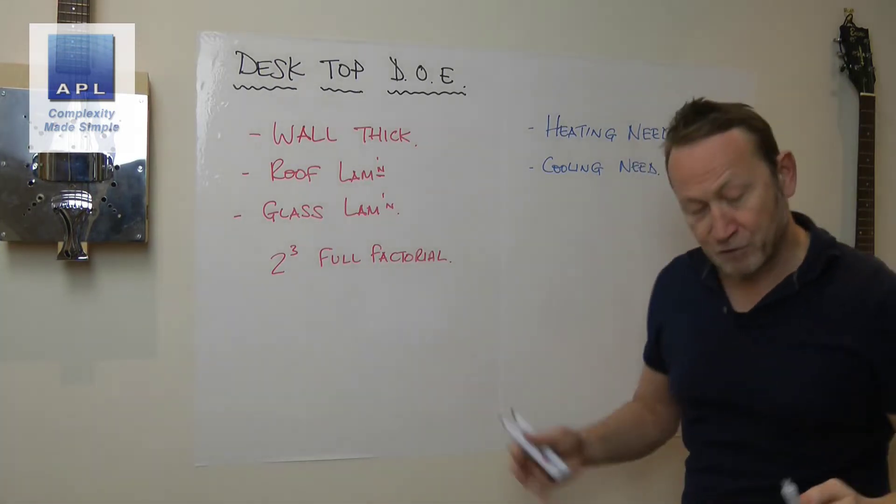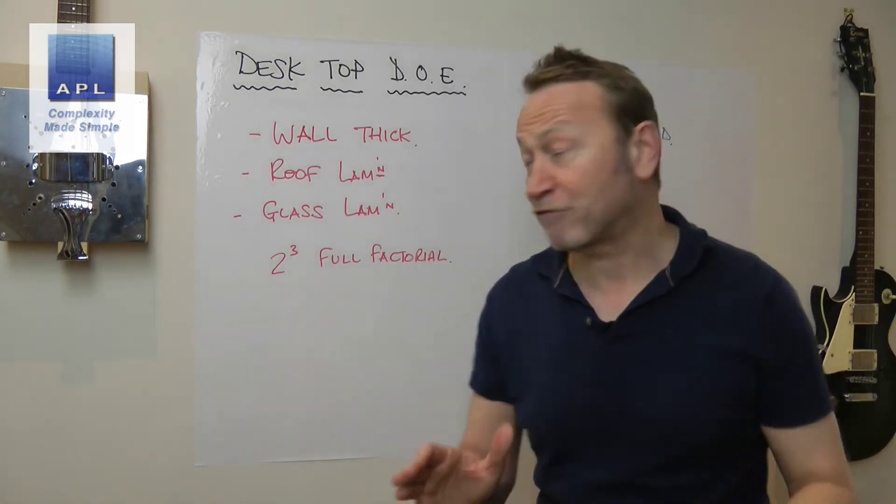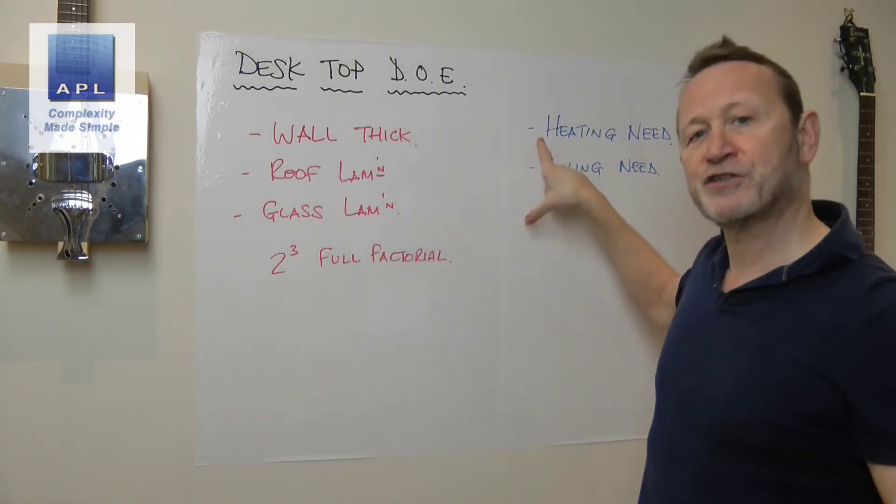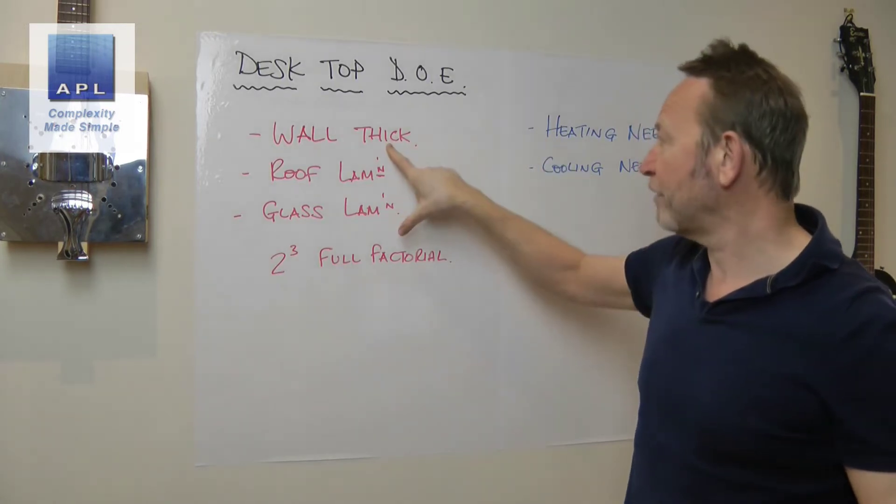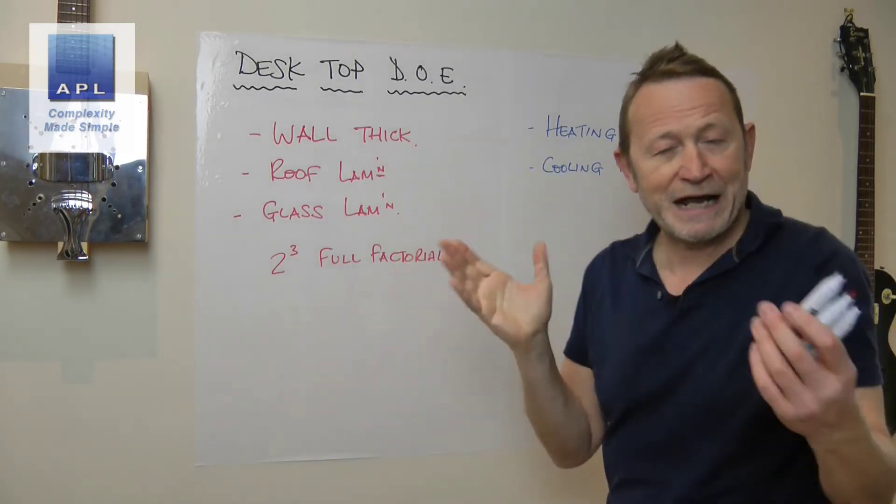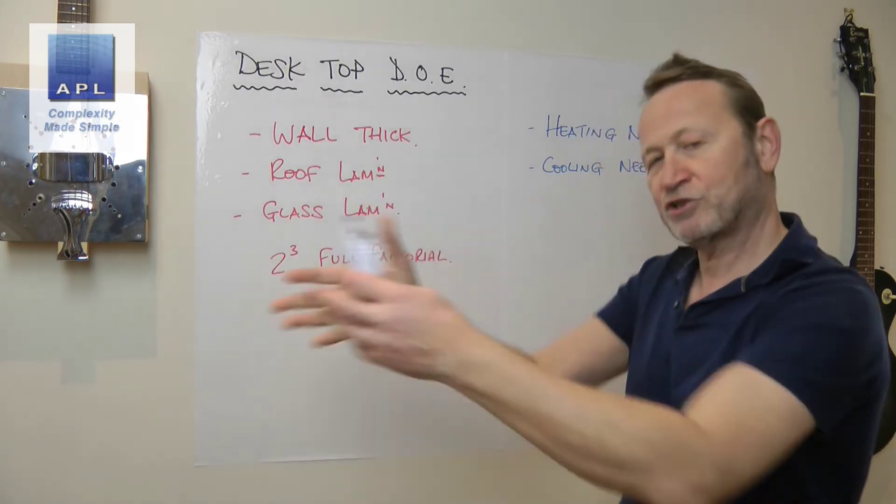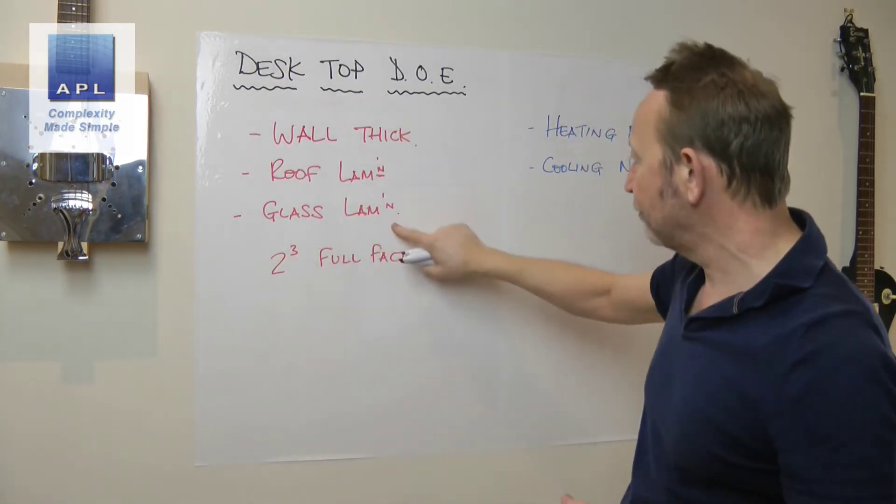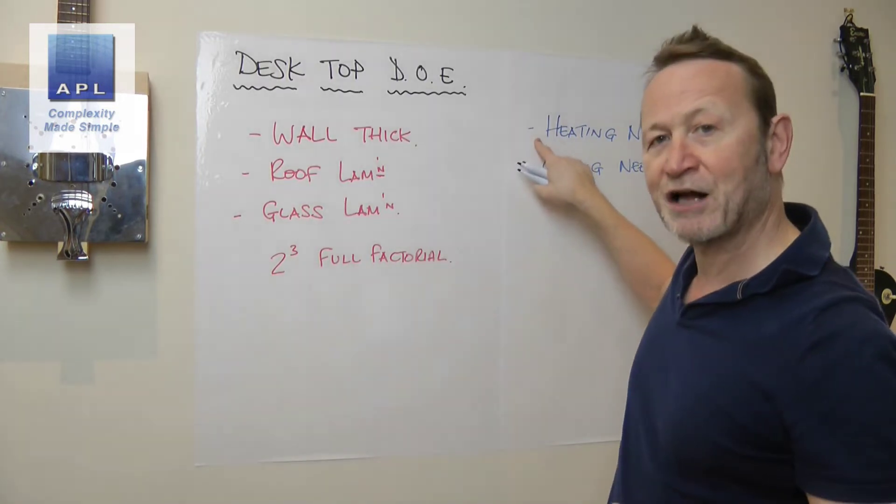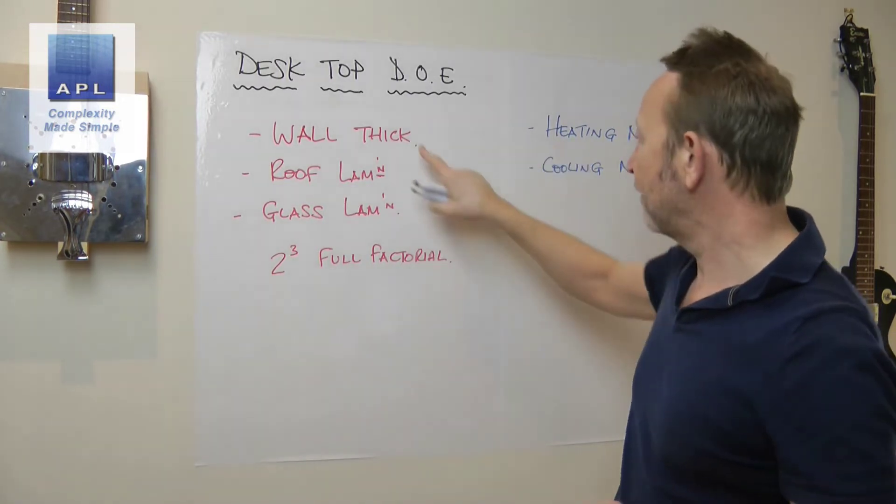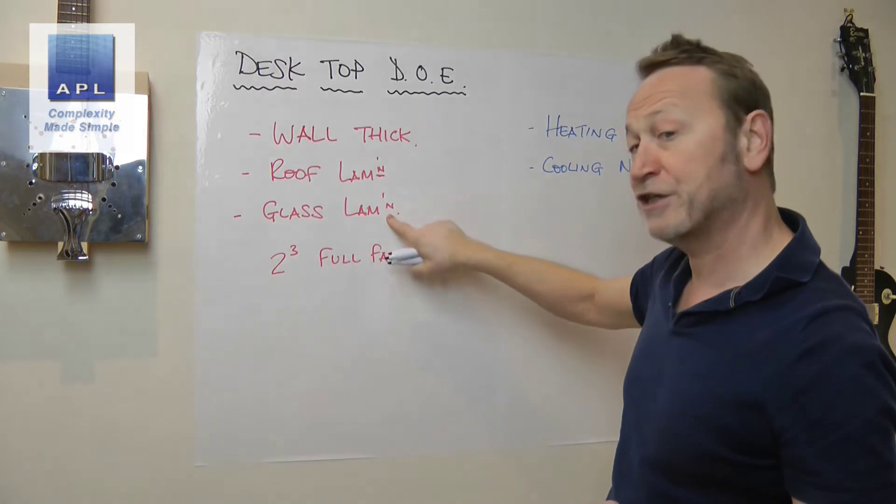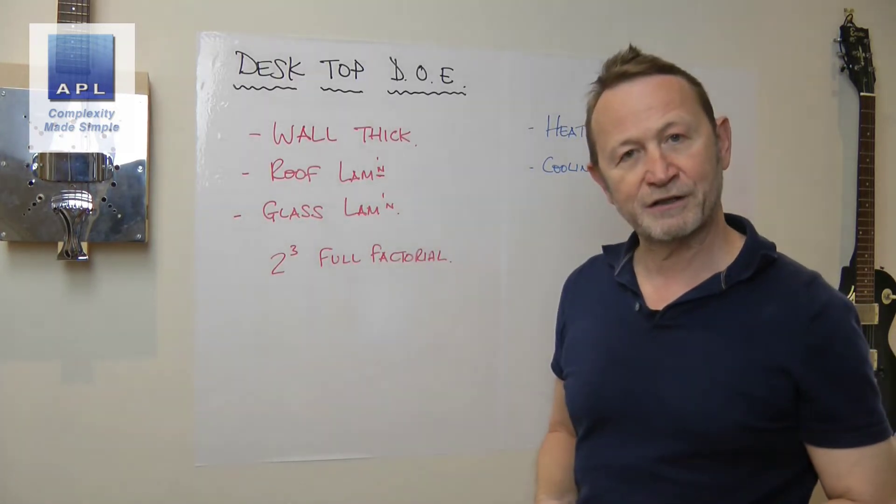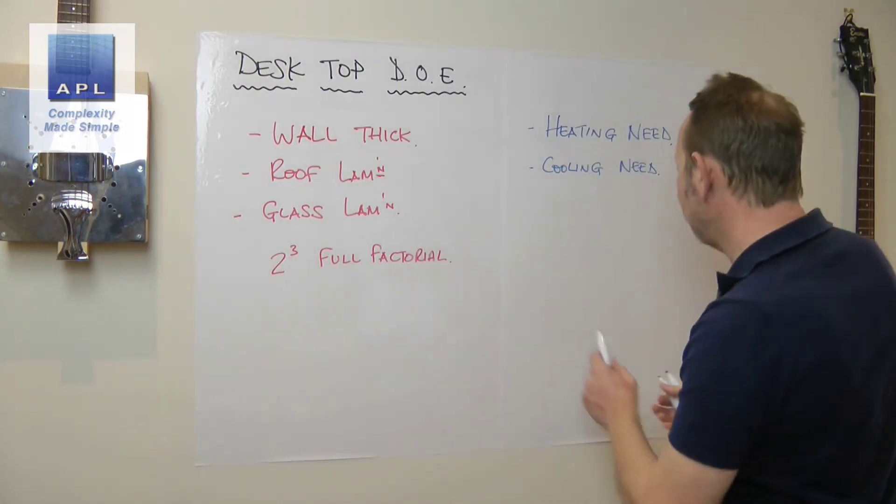Now if you think about this logically, what we're going to have is some kind of calculation that feeds into this result. So whatever number we put in the box here in an Excel spreadsheet, you set up your Excel spreadsheet, you put a formula in for taking these three variables and calculating the heating need, and then you put a formula in for moving these three variables and calculating the cooling need.